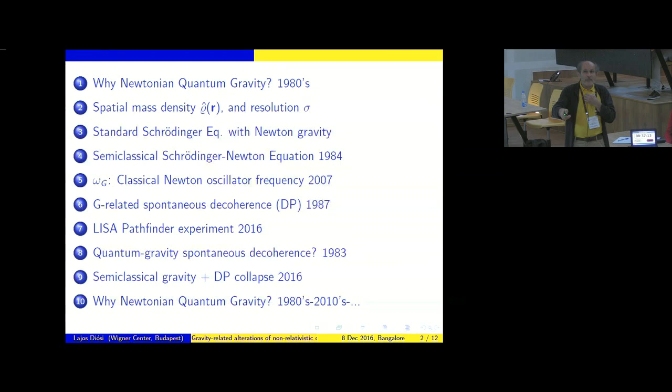Then I will come to a parameter, omega g, which plays a crucial role in all Newtonian modifications of quantum mechanics. Then I come to talk about the gravity-related spontaneous decoherence model, the DP model, where P is Penrose. And it's not my credit that I chose this order between the two.